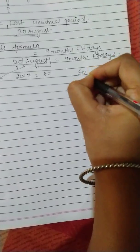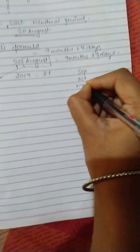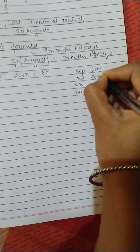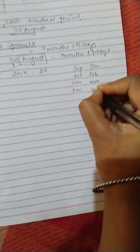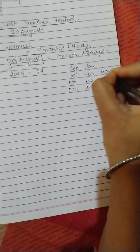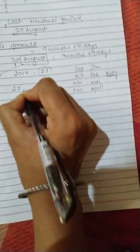aap nine months calculate kariye. August ke baad kya ata hai? Humare paas September, October, November, December, January, February, March, April. Or 9th month is May. To humare paas a gaya May, and 27th of May.